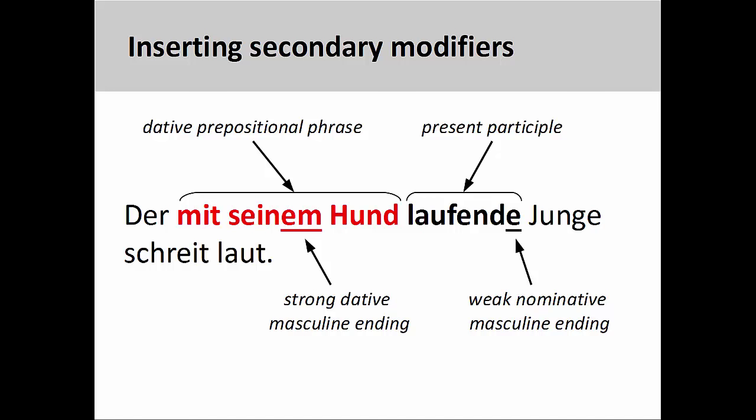The dative prepositional phrase 'mit seinem Hund,' with his dog, is an adverbial modifier describing the manner in which the boy runs. We will need to place this directly before the present participle. It is very important to note that the strong adjective ending in the dative prepositional phrase remains the same, even though the entire extended modifier is used to describe a masculine noun in the nominative case, 'Junge.'